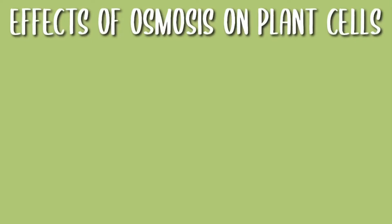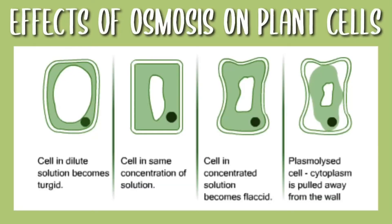Now let's look at how osmosis affects plant cells. On the far left we have a plant cell that is turgid because water has moved into it causing it to swell up. Then we have a cell that has not changed in shape or size because it's been in a solution with the same concentration. Then we have a cell in a concentrated solution and this cell has become flaccid because water has moved out.